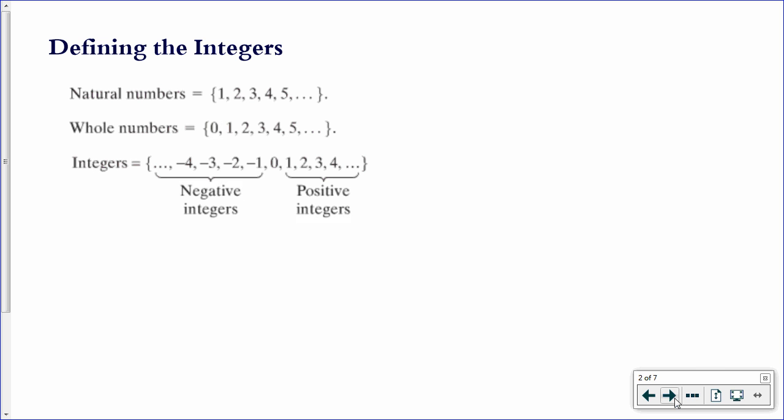Then the integers introduces the entire negative side of the number line. So integers are the negative and positive numbers and zero. Only whole numbers, no decimals. So negative and positive and zero.